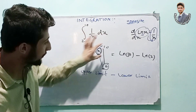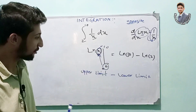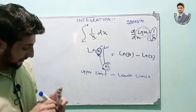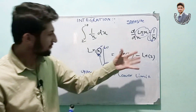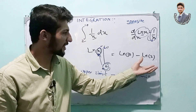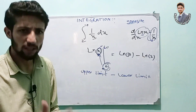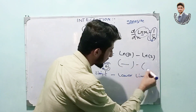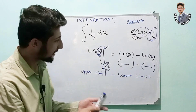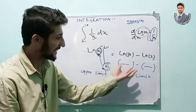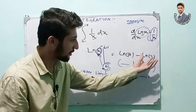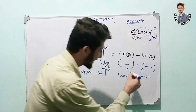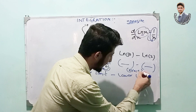After integrating we put the value of the upper limit and the lower limit. So we get ln 10 minus ln 2. We will get the value of ln 10 from a calculator and the value of ln 2 from a calculator, then subtracting both will give the exact answer.